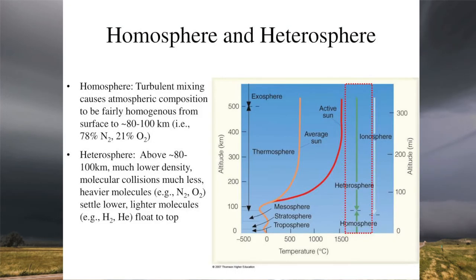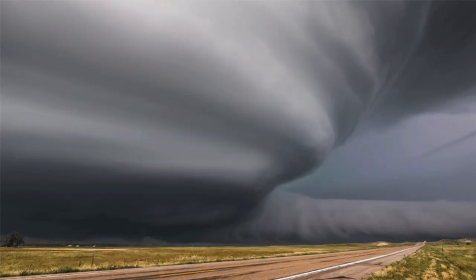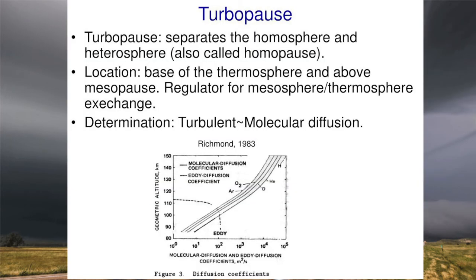The atmosphere can also be divided into two separate regions based on composition. The homosphere is below 80 kilometers — a well-mixed layer due to turbulence and eddy diffusion. The heterosphere is above 80 kilometers — a stratified layer where gases are separated by weight, with heavier gases near the bottom and lighter gases near the top. The turbopause is the area of separation between the homosphere and heterosphere, occurring roughly at 80 kilometers above Earth's surface.